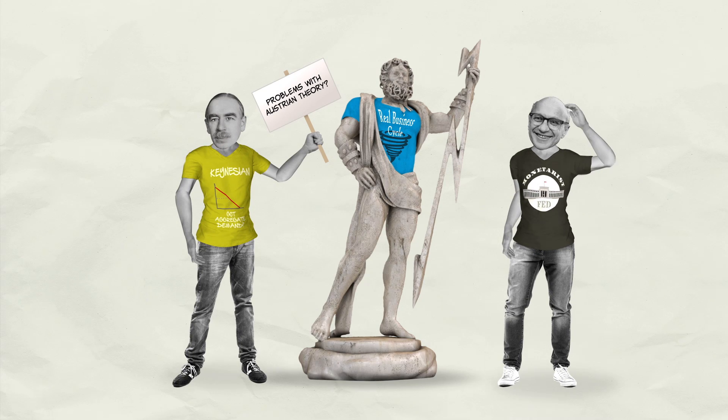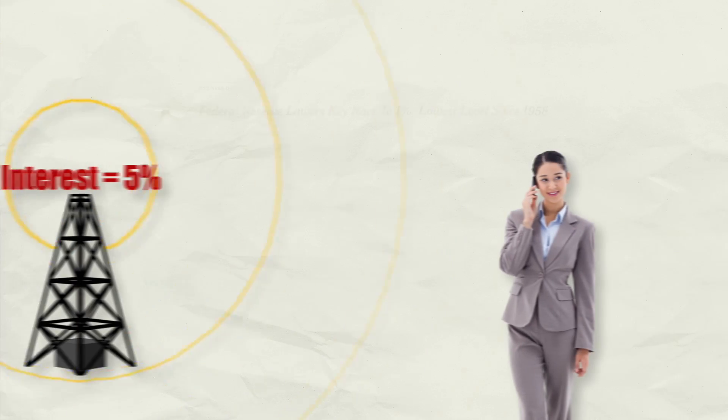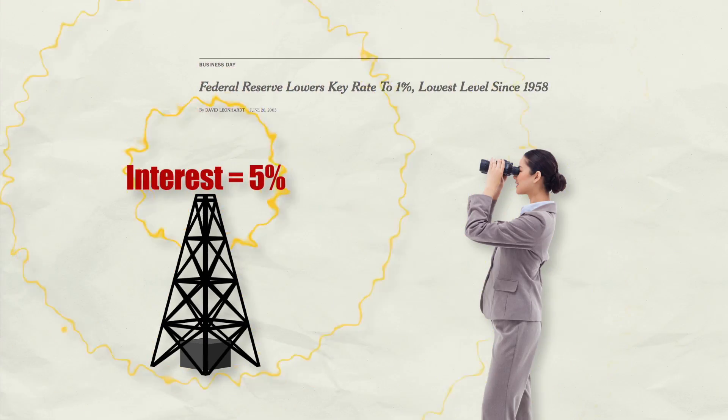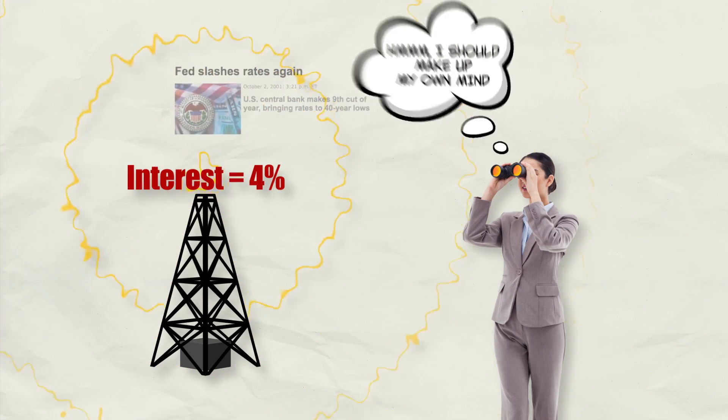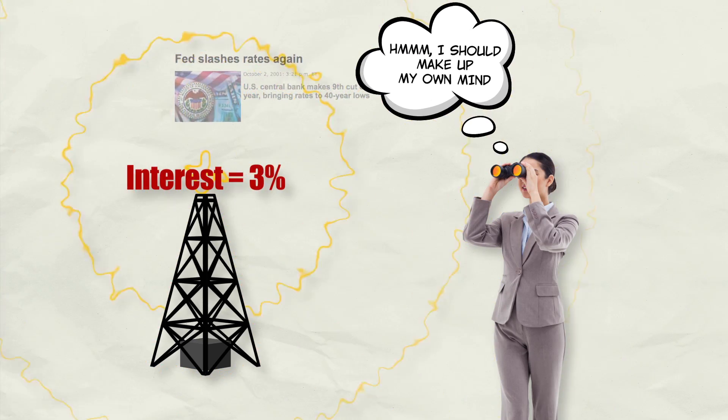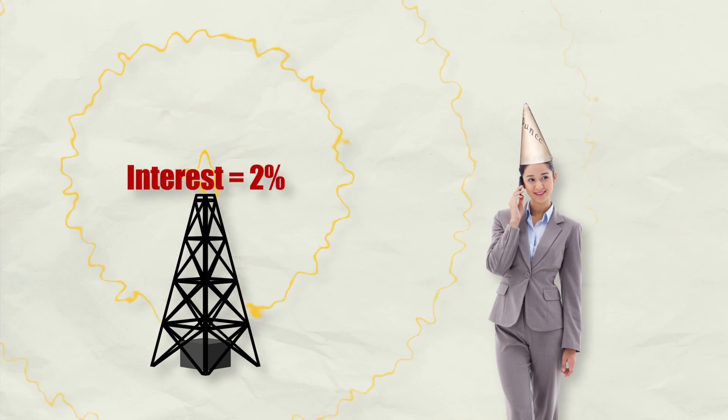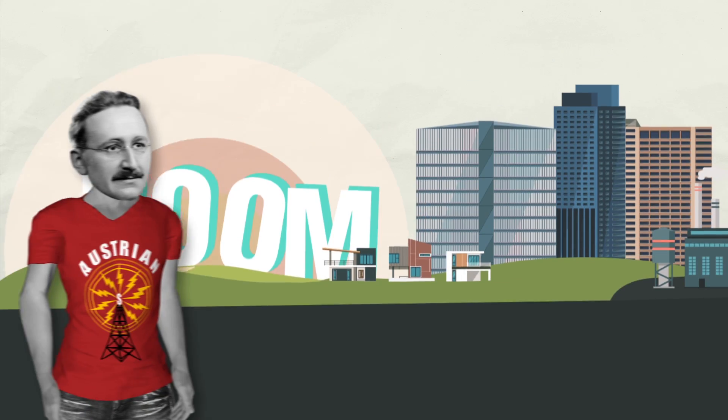So what are some possible problems with the Austrian theory? First, the Austrians don't quite explain why so many smart market entrepreneurs are so easily tricked by the central bank and the increase in the money supply. Interest rates are lower — so what? A lot of entrepreneurs know that central banks manipulate interest rates all the time. The entrepreneurs might just think, I should wait, or I should just make up my own mind and not be fooled this time around.